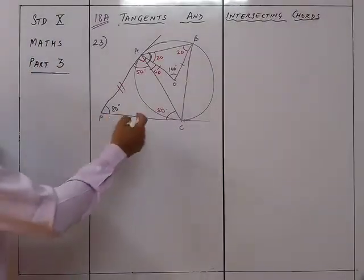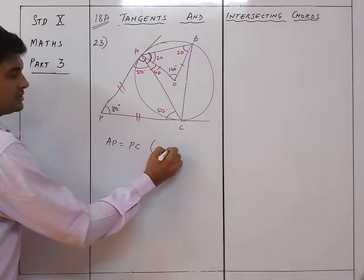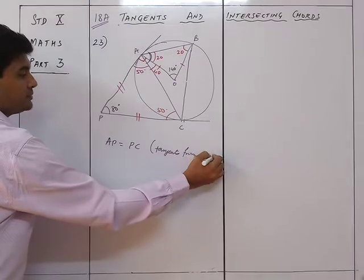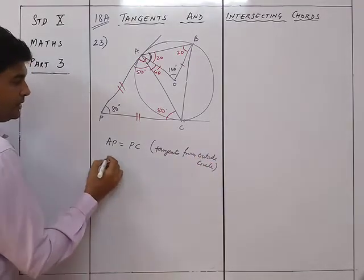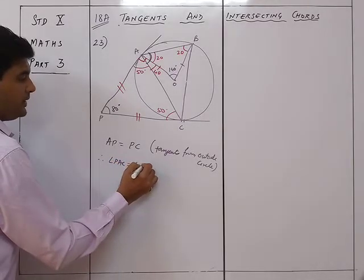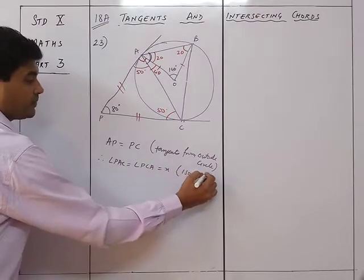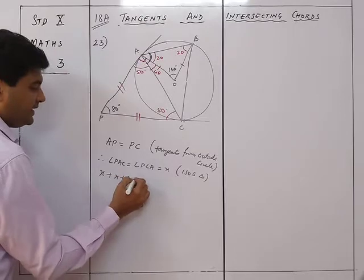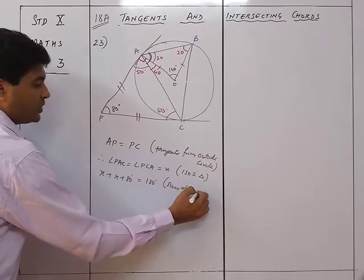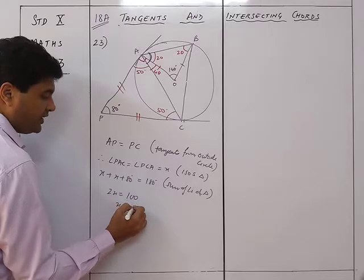Now let's write it properly. AP equals PC — tangents from outside the circle. Therefore angle PAC equals angle PCA equals X — isosceles triangle. So X + X + 80 = 180 degrees (sum of angles of triangle), giving 2X = 100, so X = 50 degrees.